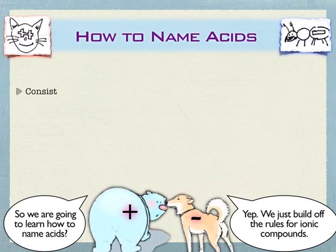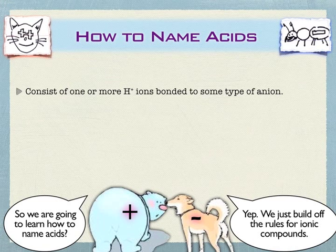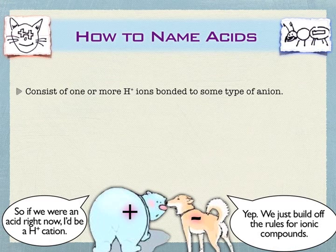As we build off the ionic rules, what makes acids different is that the cation is always going to be H+, a hydrogen cation. This makes it very easy to identify — just look for compounds that begin with H that aren't things like water or hydrogen peroxide. Most of the time, if it begins with an H, it's their way of saying we're dealing with an acid. So in this case, the cation would be a hydrogen cation.